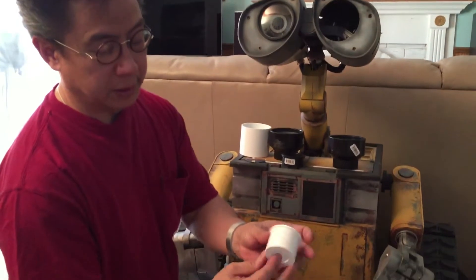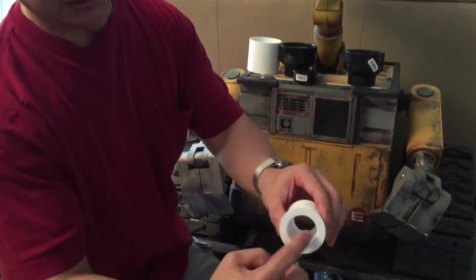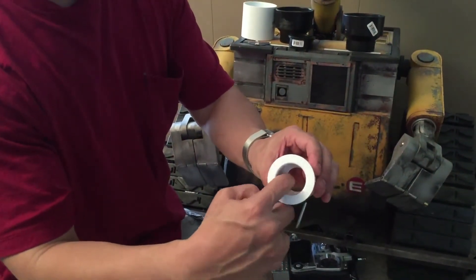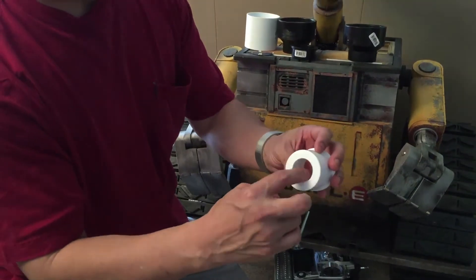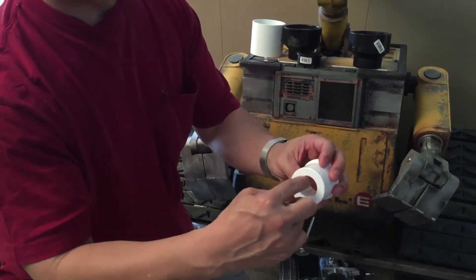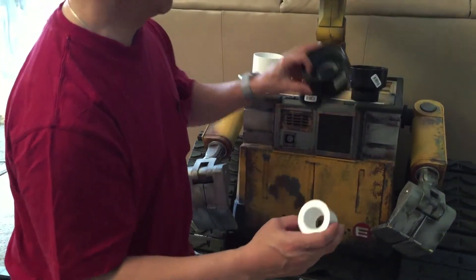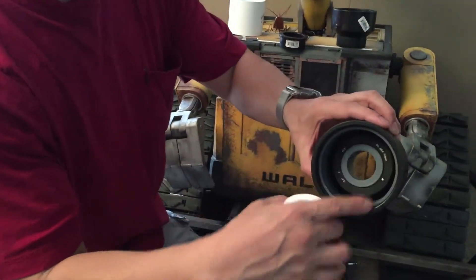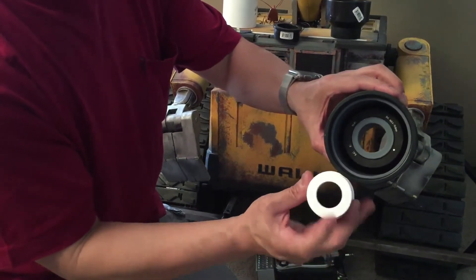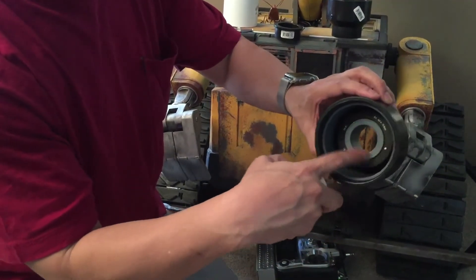On this piece, you can see that there's a little lip on the inside. What you need to do is put this on a router and just get rid of this edge here, so that it becomes nice and thin like this one. Once you get rid of that lip, it will look like this.